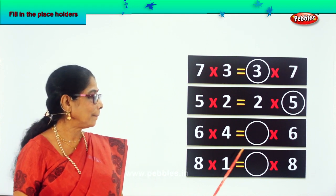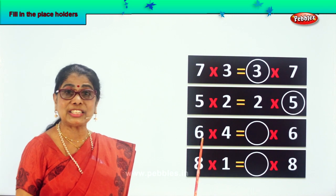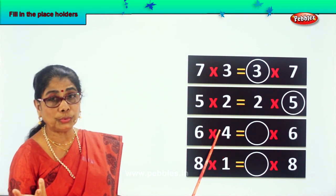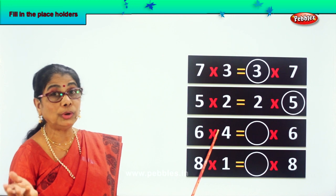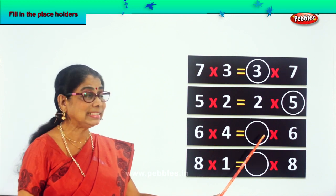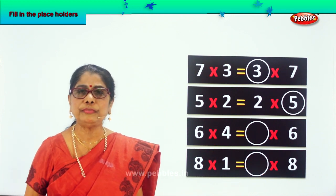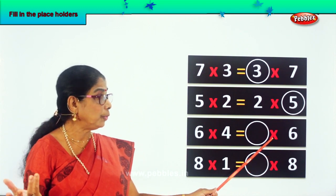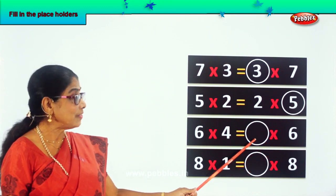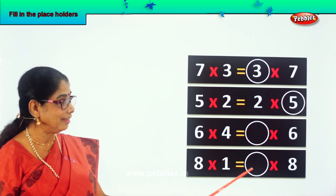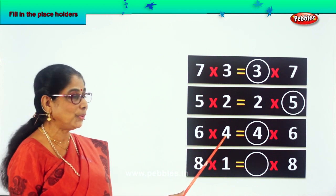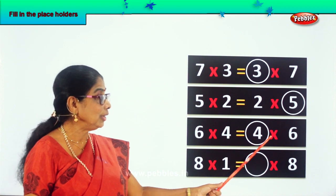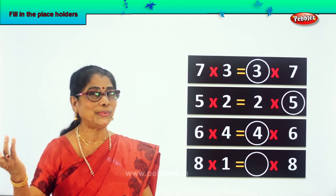Look. 6 into 4. What are 6 fours? 24. 6 into 4 is 24, which is also equal to dash into 6. How to get 24? 6 into what number will give you 24? 4. So we put down 4 here. Look — 6 into 4 is also equal to 4 into 6, which equals 24.